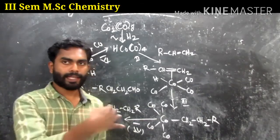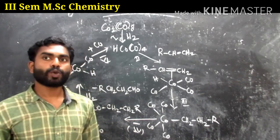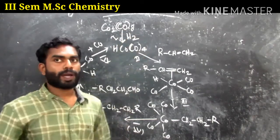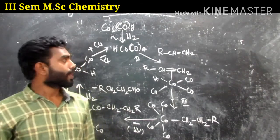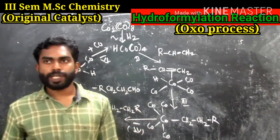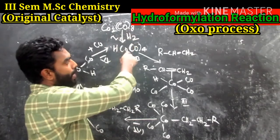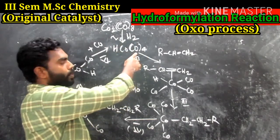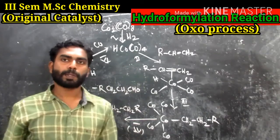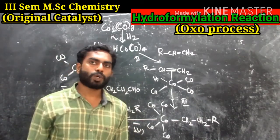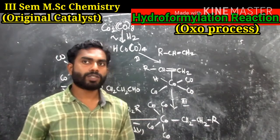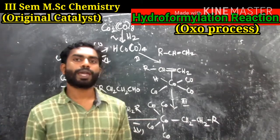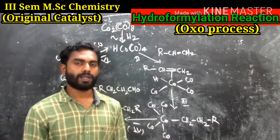The catalytic cycle proceeds as follows. In step 1, it involves the generation of the active catalyst HCo(CO)₄ from Co₂(CO)₈ by the addition of H₂. HCo(CO)₄ is the five-coordinated active catalyst species.